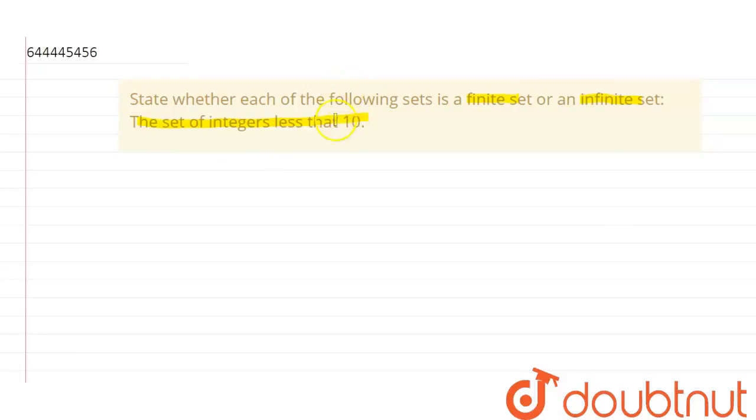So a finite set is the one which contains finite number of elements or we can say countable number of elements, right? But an infinite set is the one which contains infinite number of elements. So let us see the set of integers.